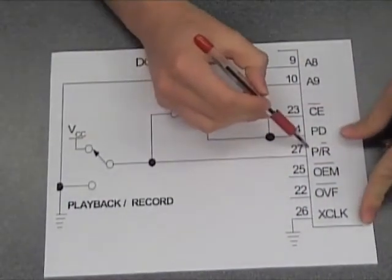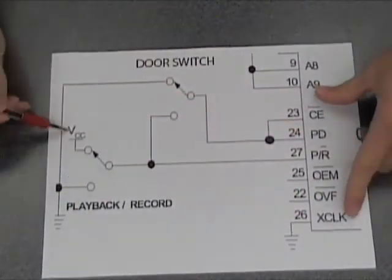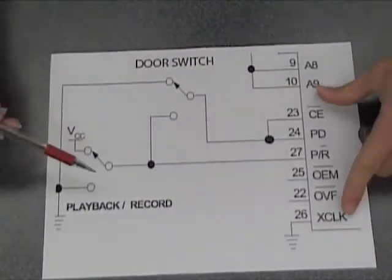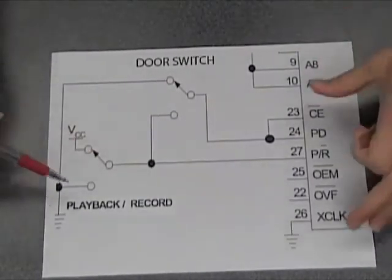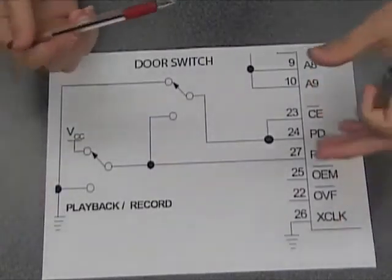First, we have the playback record pin. When it's connected to the source voltage, it's also called high. The chip's in play mode. When it's connected to ground, it's also called low and it's in record mode.